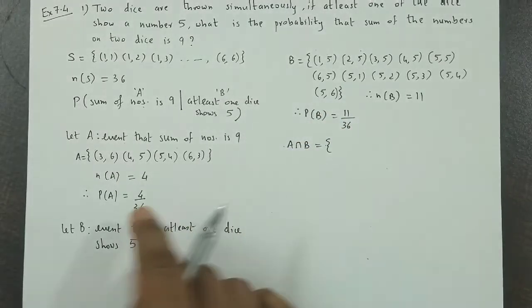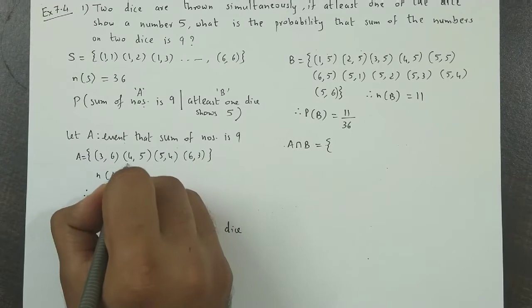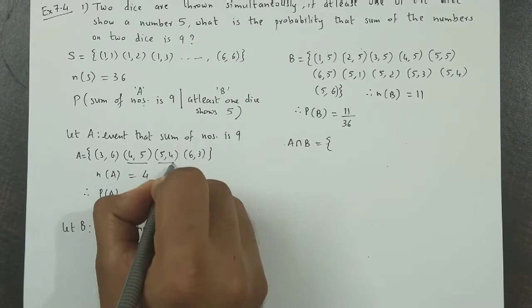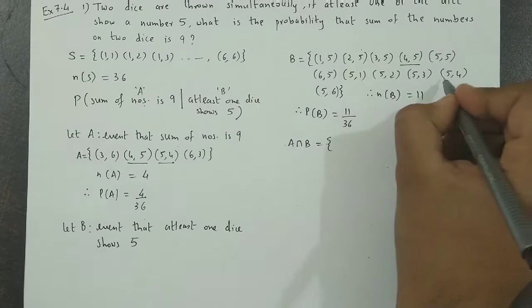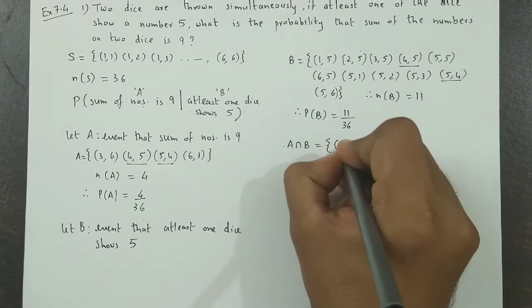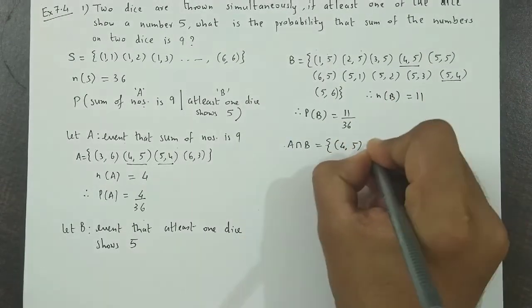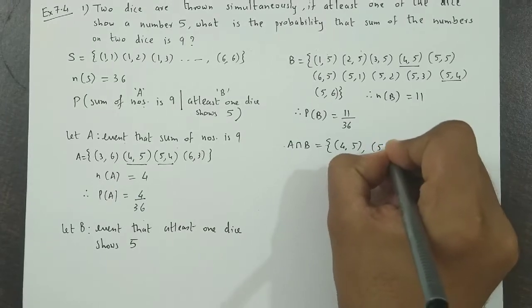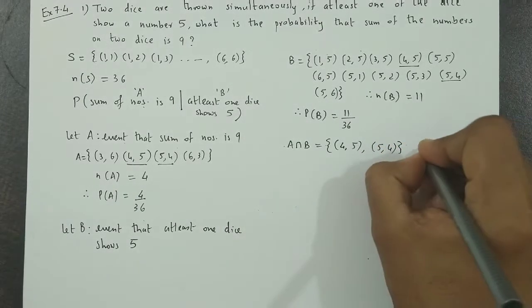intersection B: if we see the outcomes which are common, one is (4,5), two is (5,4). Here we have (4,5) and (5,4). We have (4,5) and (5,4). So therefore,